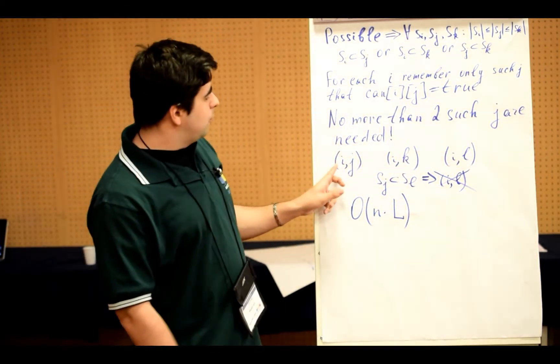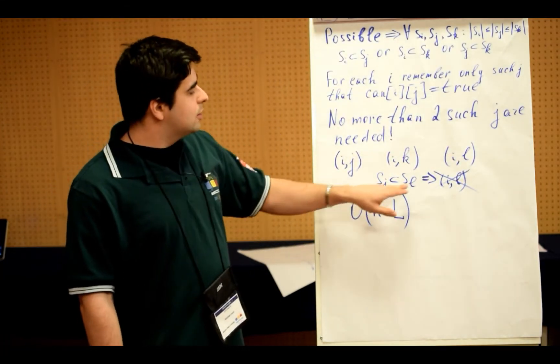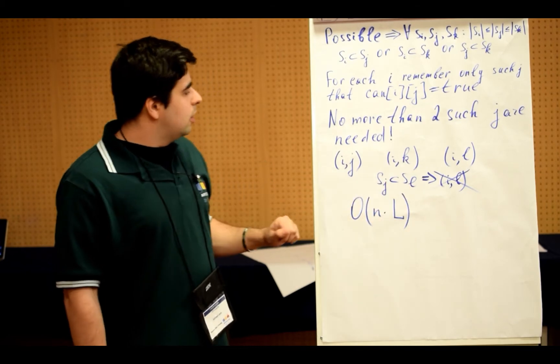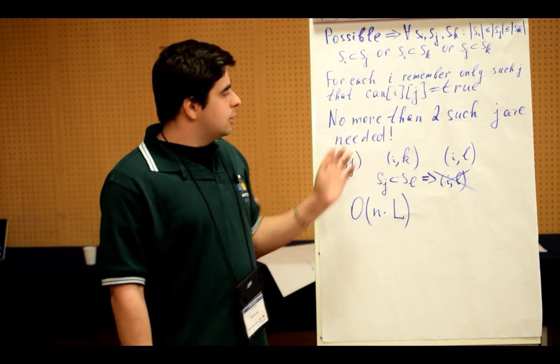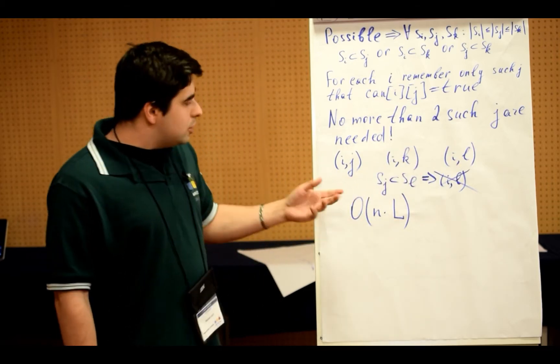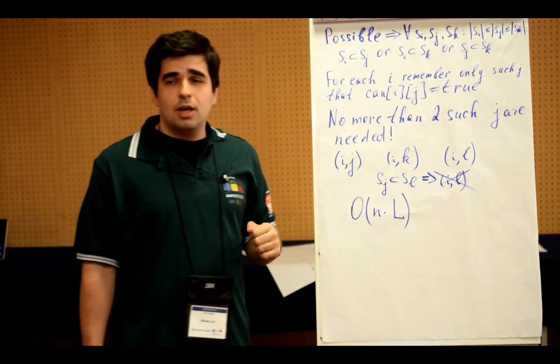Why is that? Because we have three pairs: (I, J), (I, K) and (I, L). And for example, SJ is a subsequence of SL. Then (I, L) is not needed, because in the future, when we consider future strings, it will be much easier to fit SJ into one of those than SL, because SJ is a subsequence of SL.